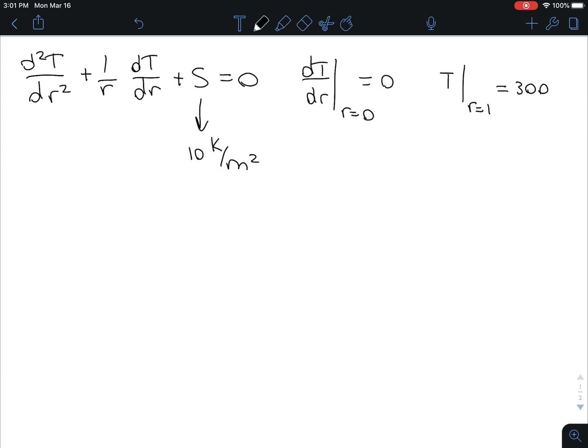notice that this is not an initial value problem, because we know the derivative with respect to R of temperature at R equals zero, and we know the temperature of the rod at R equals 1. So,